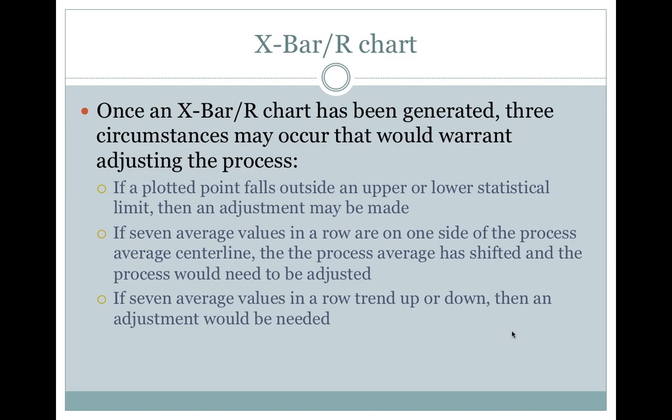Once an X bar R chart has been generated, three circumstances may occur that would warrant adjusting the process. Number one, if a plotted point falls outside an upper or lower statistical limit, then an adjustment must be made. Number two, if seven average values in a row are on one side of the process average centerline, then the process average has shifted and the process would need to be adjusted. Number three, if seven average values in a row trend up or down, then an adjustment would be needed.